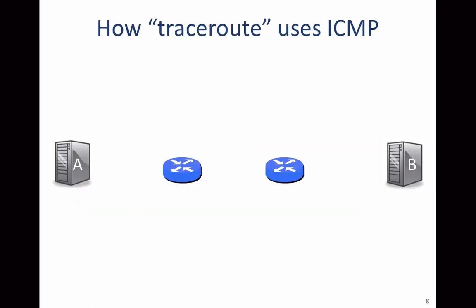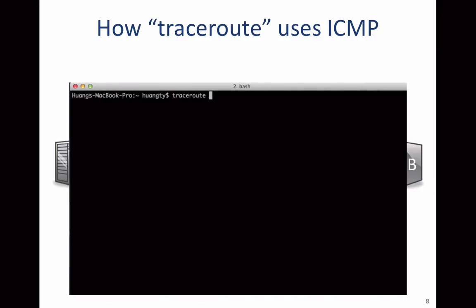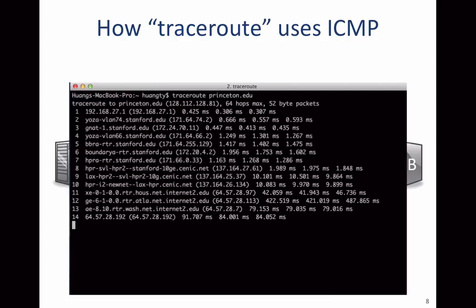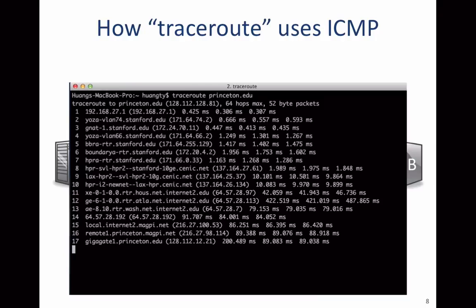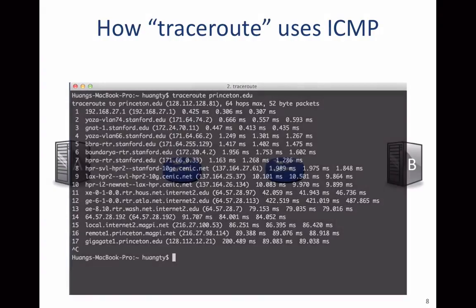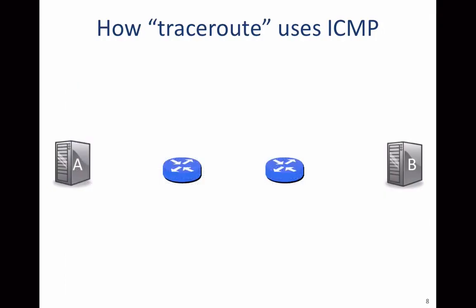Now let's look at how traceroute works. Traceroute is an application that tells us the path packets take through the network and the routers visited along the way. You can try it by typing 'traceroute' followed by the name of a server. Traceroute tells us not only the path taken by packets, but the round-trip delay to each of the routers along the path. The goal is to find all the routers on the path from A to B and measure the round-trip time to each of them.